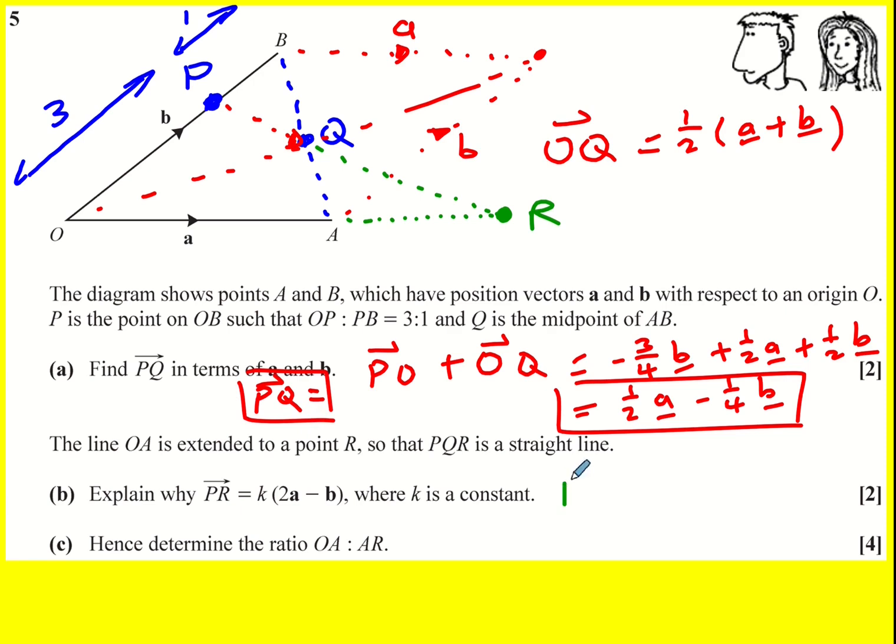Now, a key result is going to be that PR is a multiple of PQ. And therefore PR is going to be, I don't know, I'm going to call it lambda for a moment because we're sort of trying to get to k, but we can't just write k straight away. It's not quite right.